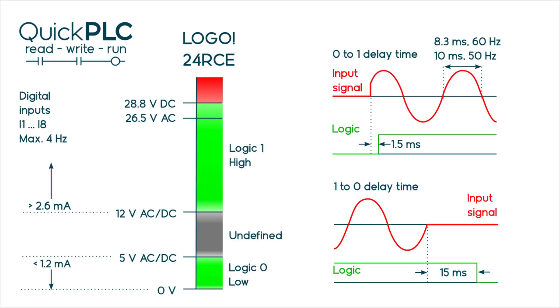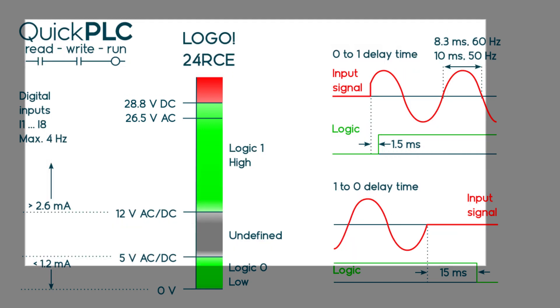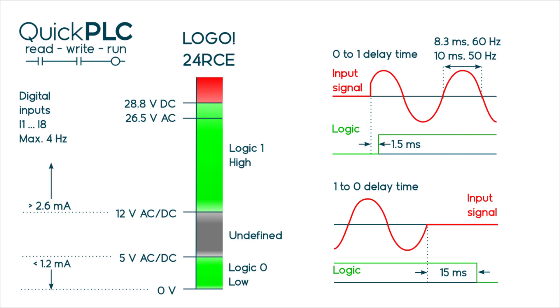The 24 RCE can handle AC as well as DC inputs. The logic levels are similar and the input resistance is a little lower. The AC ratings are RMS which will have a peak voltage of root 2 times the RMS voltage and that's why the max input voltage is lower for AC.